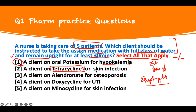Tetracycline for a skin infection — yes, one of the cyclines. You have to take it with a full glass of water and remain upright. It causes esophagitis. Alendronate — this is a bisphosphonate, last name ending in 'dronate.' This is what you take for osteoporosis and osteopenia. A commonly asked instruction: remain upright for 30 minutes and take with a full glass of water to prevent esophagitis.